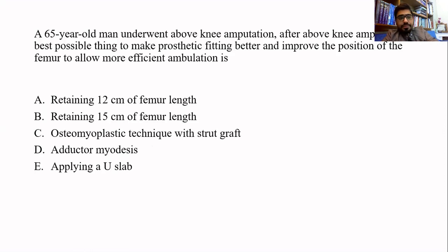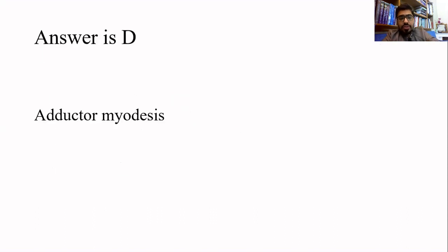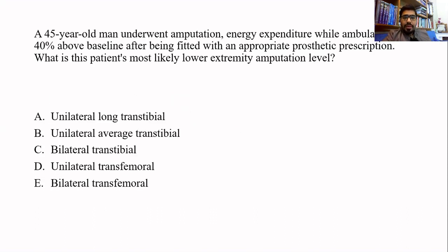The next question is also from amputations: after above-knee amputation — more specifically a transfemoral amputation — what is the best step to achieve better prosthetic fitting and improve the position of the femur to allow more efficient ambulation? The answer is D: adductor myodesis.